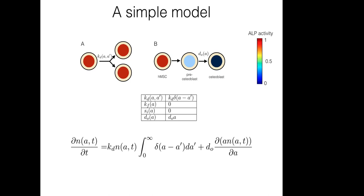A simple model accounts for the experimentally observed data with just two processes: cell division and ALP outflux through the cell. For cell division, the choice of cell division kernel is k_D times delta(a - a'), which means ALP redistributes equally into the two daughter cells and each daughter has the same ALP amount as the parent cell — a symmetric but non-conserved division, since the sum of ALP in both daughters is twice that of the parent.